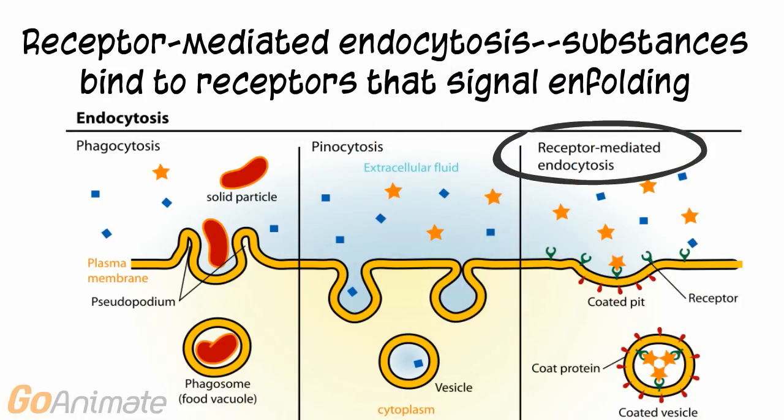In receptor-mediated endocytosis, substances attach to membrane receptors that signal the cell membrane to enfold around the substance.